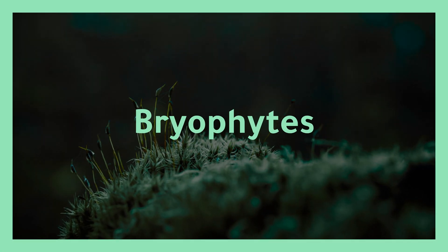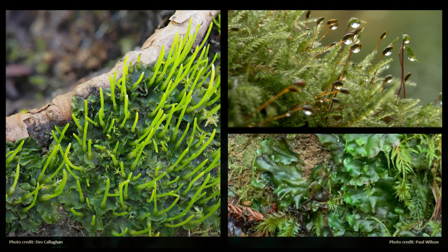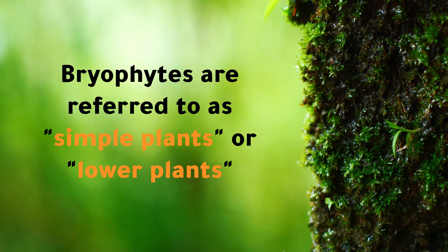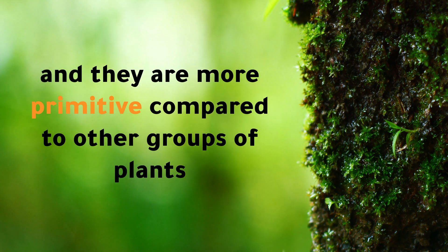Bryophytes. There are three groups of bryophytes. They include hornworts, mosses, and liverworts. While each one is distinct from each other, they have similar life cycles. Bryophytes are referred to as simple plants or lower plants, and they are more primitive compared to other groups of plants.